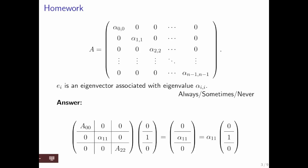So here's the answer. You partition the matrix where you identify the i-th entry on the diagonal, and we'll call that alpha_1,1.